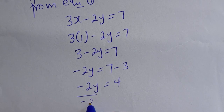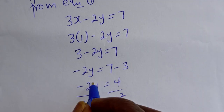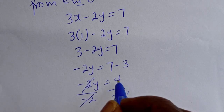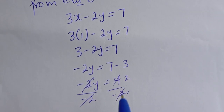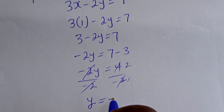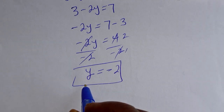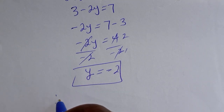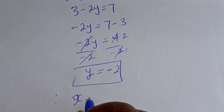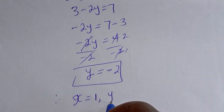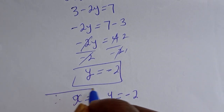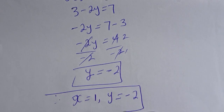Let's divide both sides by minus 2. Therefore y is equal to minus 2. Our final answers using the elimination method are: x is equal to 1 and y is equal to minus 2. You can see that we have the same values from both methods.